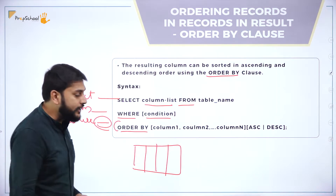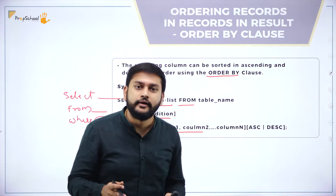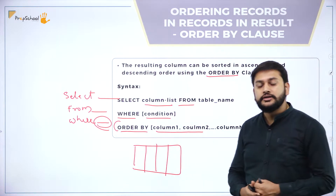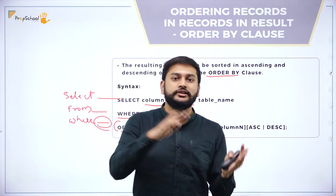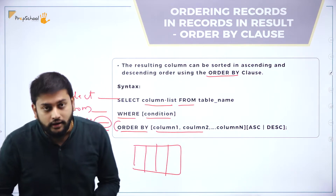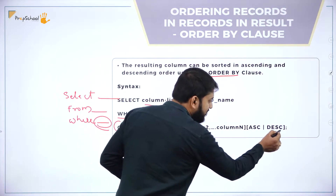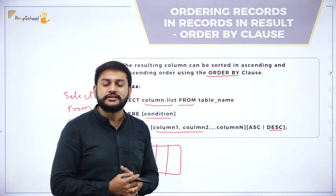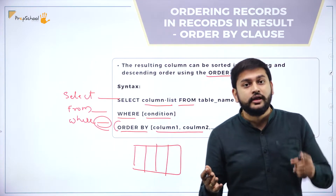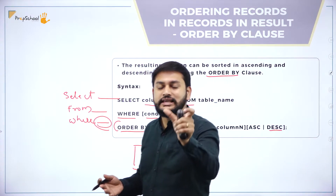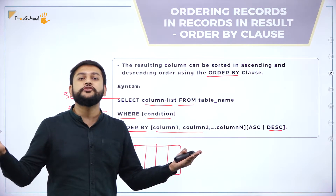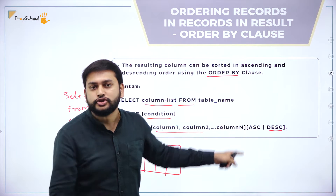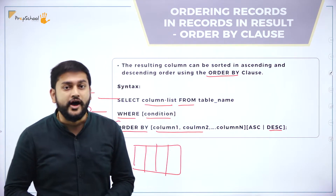After ORDER BY, specify the column name in which you want to sort the data. If you don't specify ascending or descending, it will default to ascending order. If you want descending order, use the keyword DESC. Remember: DESC in ORDER BY means descending order, but DESC used with a table name describes the table structure — two different uses.